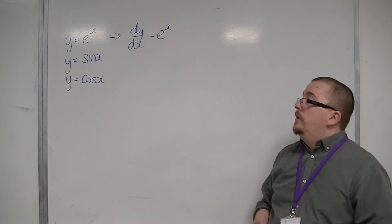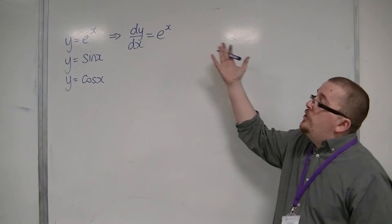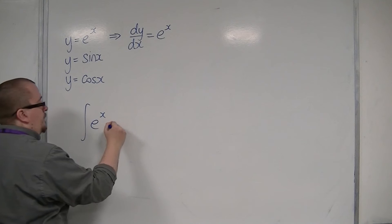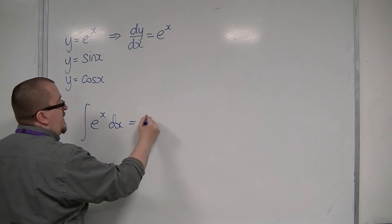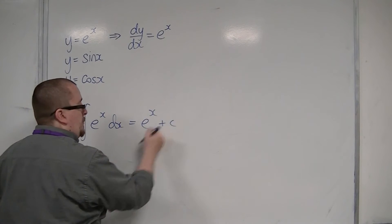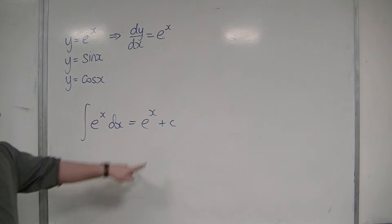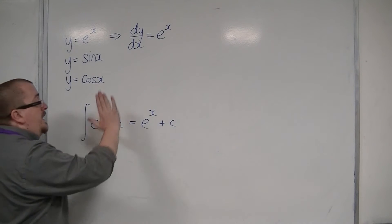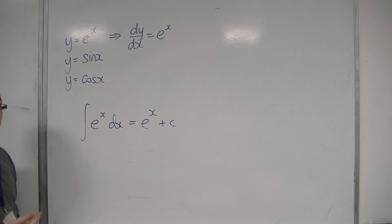Therefore, if y equals e^x differentiates to e^x, then the integral of e^x is e^x. And of course, because this is an indefinite integral, I must put a plus c for a constant of integration. So e^x integrates to itself and differentiates to itself.